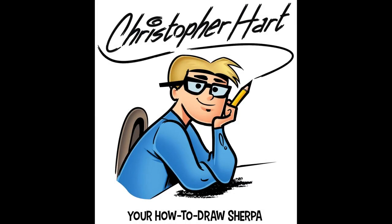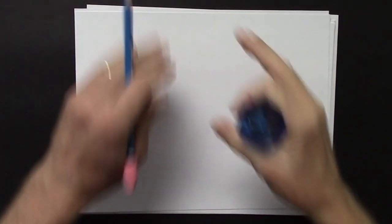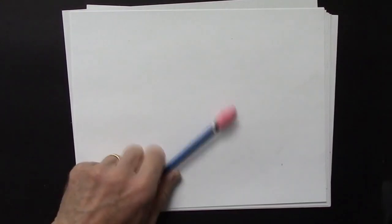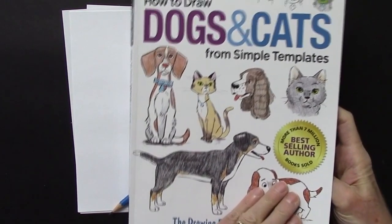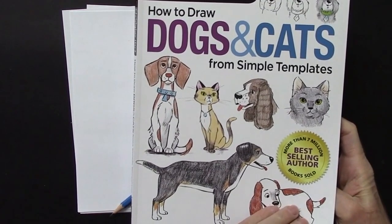Hi, my name is Christopher Hart, I'm the author of many books on how to draw, and today I'd like to show you and give you some hints on how to draw a dog's head. I posted something on Instagram and other places, and it was popular, people liked it, so I want to actually show you how to draw it step by step. It's from my book, How to Draw Dogs and Cats from Simple Templates.